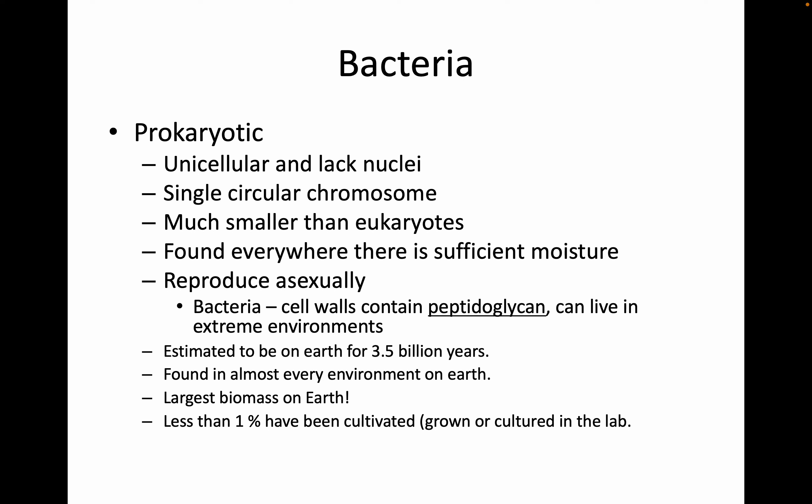Bacteria reproduce asexually by a process called binary fission. Bacterial cell walls contain peptidoglycan, and they can live in some extreme environments. They're estimated to have been on earth for three and a half billion years — earth itself is about 4.6 billion years old, so after less than a billion years of earth's existence, bacteria had evolved. They have the largest biomass on earth.